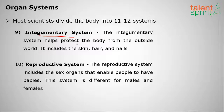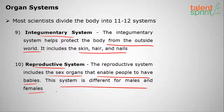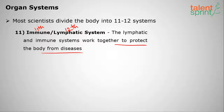The ninth organ system is the integumentary system, which helps protect the body from the outside world — it involves the skin, hair, and nails. The tenth is the reproductive system, which includes the sex organs that enable people to have children; this system differs for males and females. The eleventh is the immune system, and some classify the lymphatic system as the twelfth — both work together to protect the body from diseases.